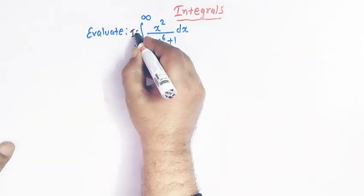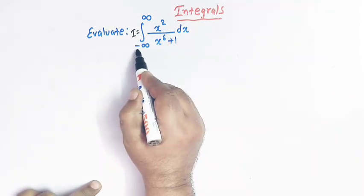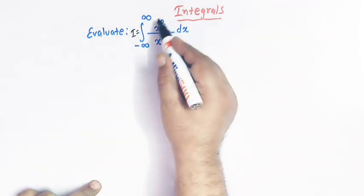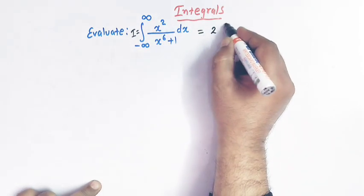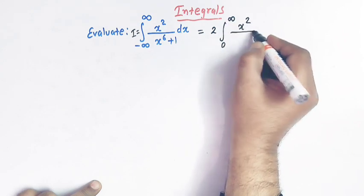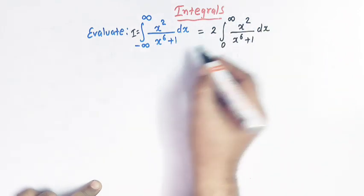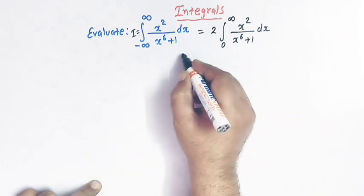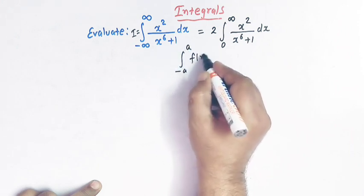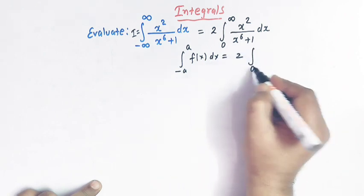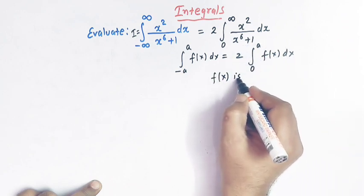Let us take this integral as I. The limits of integration are from minus infinity to infinity, and the integrand is x squared over x raised to 6 plus 1. We can write this integral as 2 times the integral from 0 to infinity of x squared divided by x raised to 6 plus 1 dx, because we have applied an important property of definite integrals: if we have an integral from minus a to a of f(x) dx, this can be written as 2 times the integral from 0 to a of f(x) dx, provided f(x) is an even function.